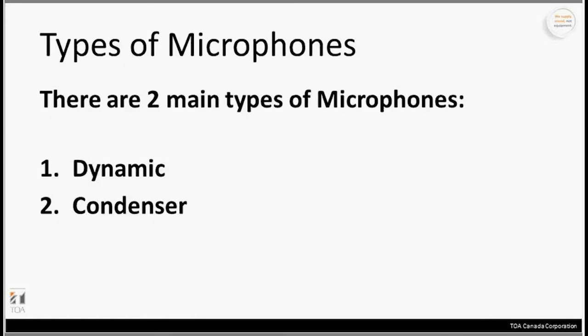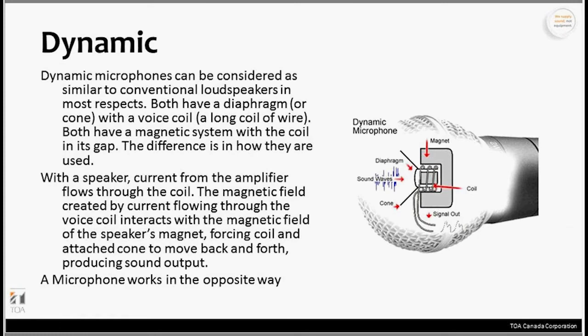There are two main types of microphones that you'll commonly run into: dynamic and condenser. We'll look at the difference between those two right now. A dynamic microphone can be considered similar to a conventional loudspeaker — it works very much the same, just in a different form factor.